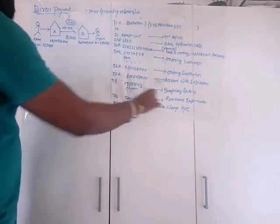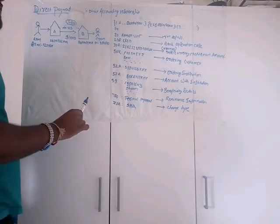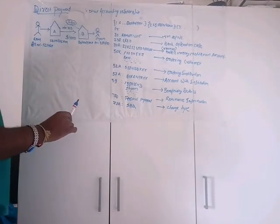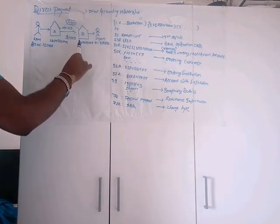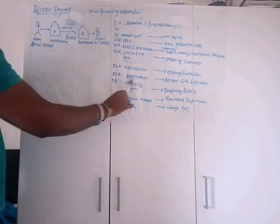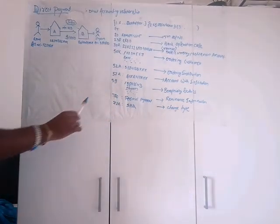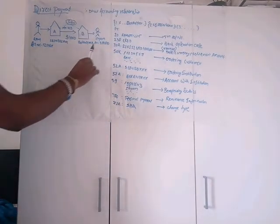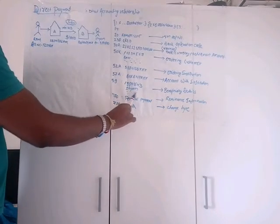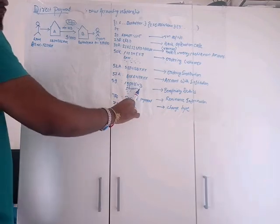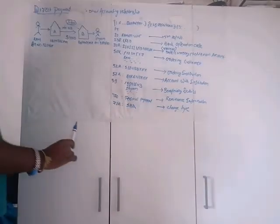Tag 57A is the account with institution — that is Sam's institution, Bank of America New York XXX. Tag 59 is the beneficiary details — Sam's account number 9876543, followed by name and address. It allows up to 35 characters per line, 140 characters maximum.